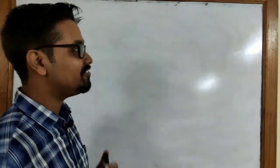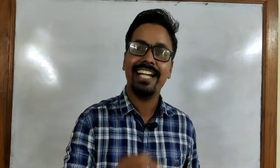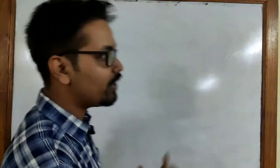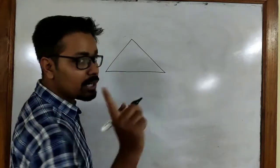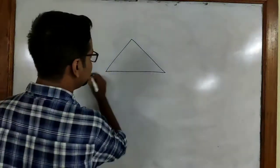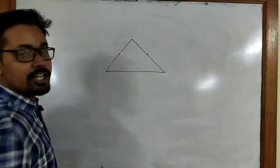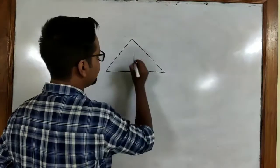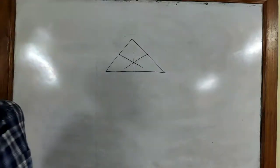Starting off with the first theorem — what does theorem 1 say? It says that the perpendicular bisectors of the three sides of a triangle are concurrent. Concurrent means they meet at the same point. Let me show you via diagram: if we have a triangle and we draw the perpendicular bisectors of all three sides — first it should be a bisector, meaning it should be at the midpoint of all three lines, and then you should have a perpendicular there. If I draw a perpendicular here, a perpendicular here, and a perpendicular here, they must lie on the same point.